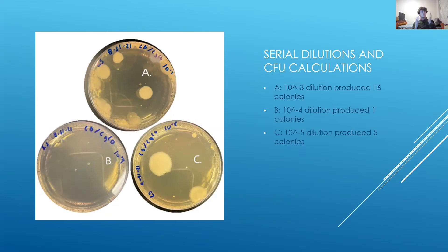The 10 to the 3, 10 to the 4, and 10 to the 5 serial dilutions were distributed with the spread plate method. The 10 to the 3 dilution produced 16 colonies, the 10 to the 4 produced 1 colony, and the 10 to the 5 dilution produced 5 colonies.